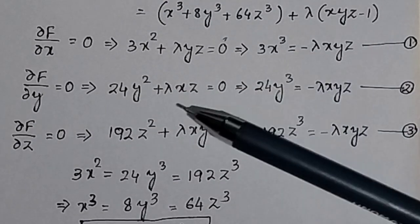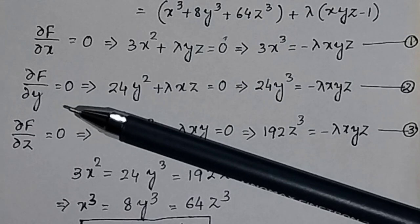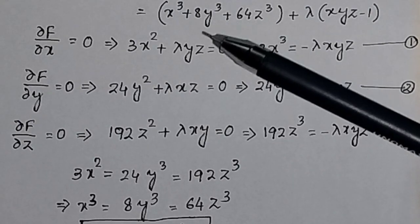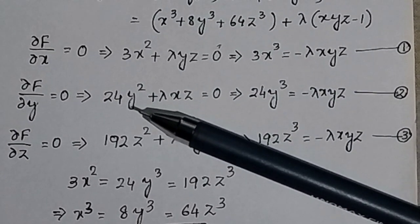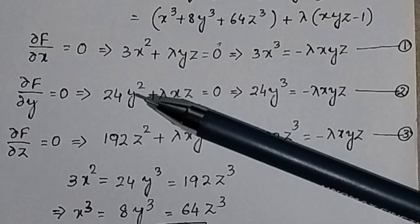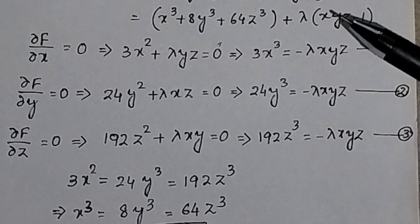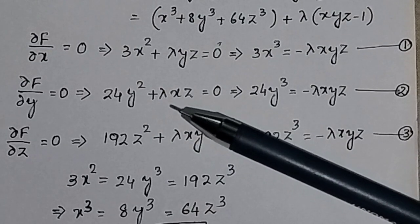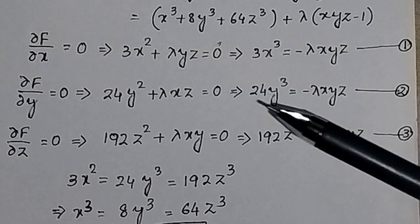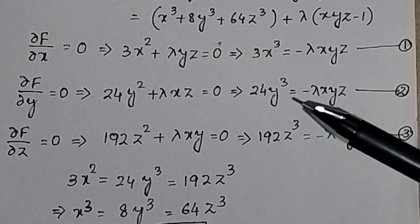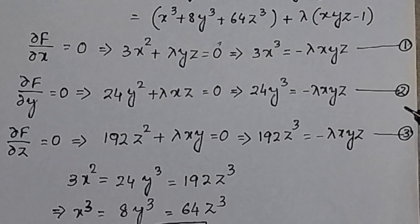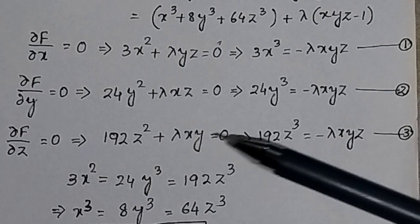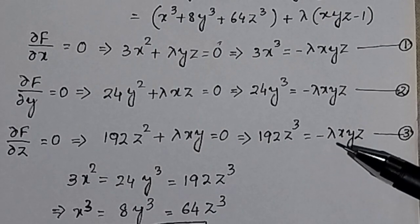Similarly, taking the partial derivative with respect to y and setting it equal to zero gives 24y² + λxz = 0, so 24y² = −λxz. Multiplying both sides by y gives 24y³ = −λxyz. This is equation number 2. Taking the partial derivative with respect to z gives 192z³ = −λxyz.